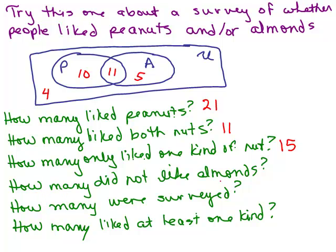How many did not like almonds? Looking outside the almond circle, I've got 10 plus 4. How many were surveyed? There are four regions — the outside region and three numbers inside. Adding them all: 11 and 5 is 16, plus 4 out here is 20, plus 10 more is 30. So 30 were surveyed.